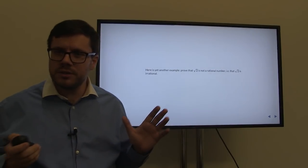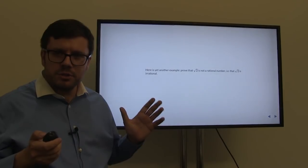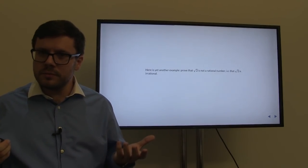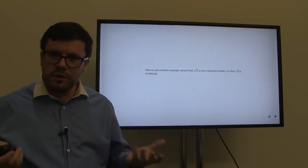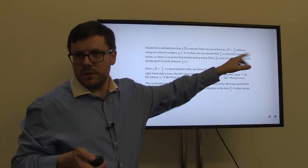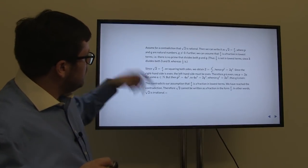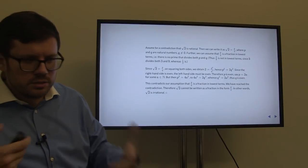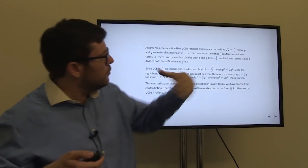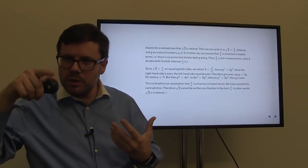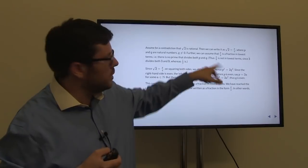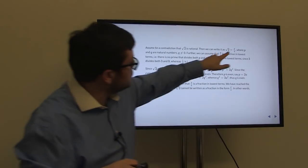Here is another example: we mentioned that square root of 2 is irrational and cannot be written as p over q. How do we prove this by contradiction? We assume that the square root of 2 can be written as p over q, where q is not equal to 0. Furthermore, we assume this fraction is in its lowest terms — that is, there is no prime that divides both p and q.